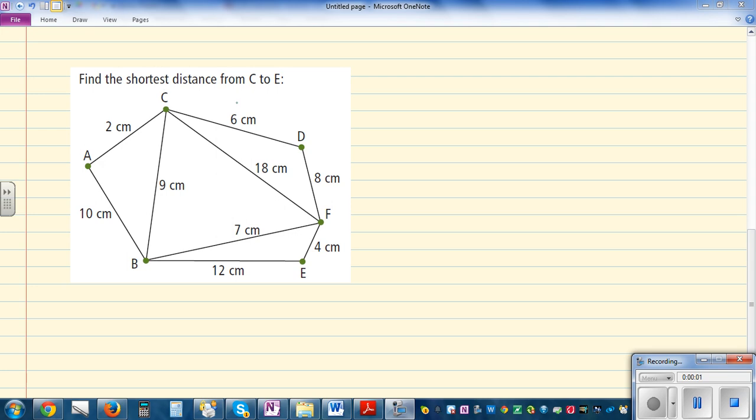Find the shortest distance from C to E. So this is C and this is E. How do you go from C to E in the shortest way? You start at C. You're starting at C so the distance you've traveled is 0.